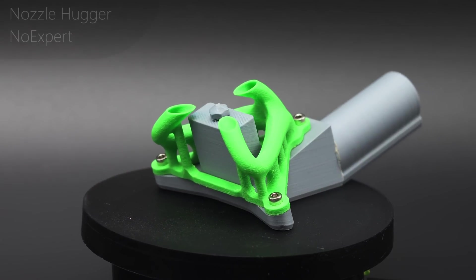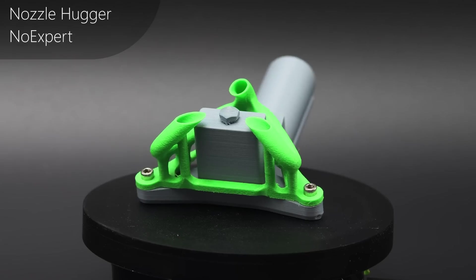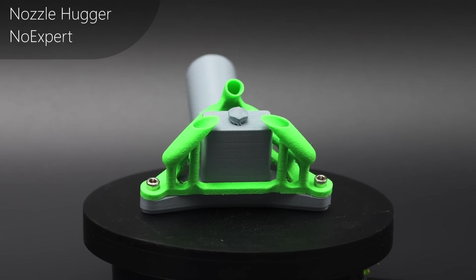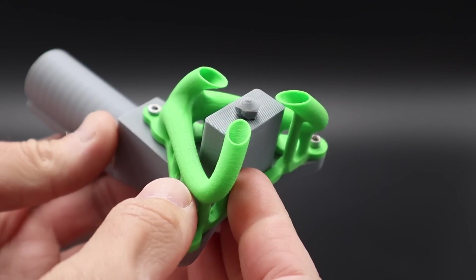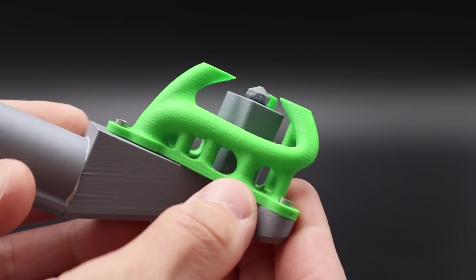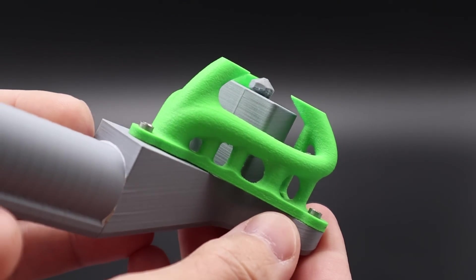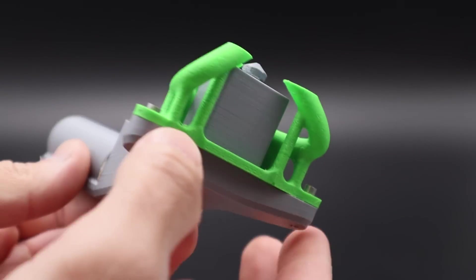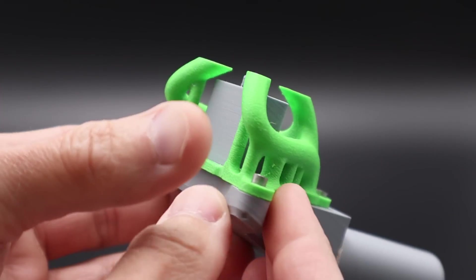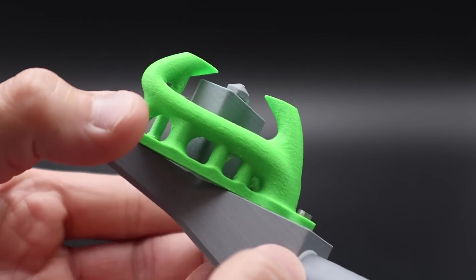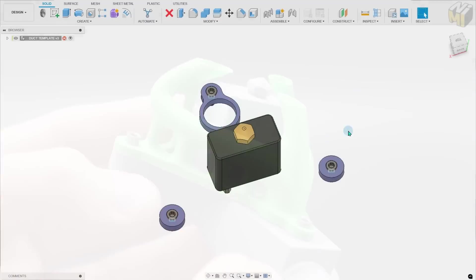Next up we have the nozzle hugger designed by no expert and this one is different again. It has these three legs which look like they're intended to cool the part itself rather than to cool the filament just after it is being extruded from the nozzle. It has a dense support structure integrated into the model itself which produces a very clean result with no need for me to add supports.